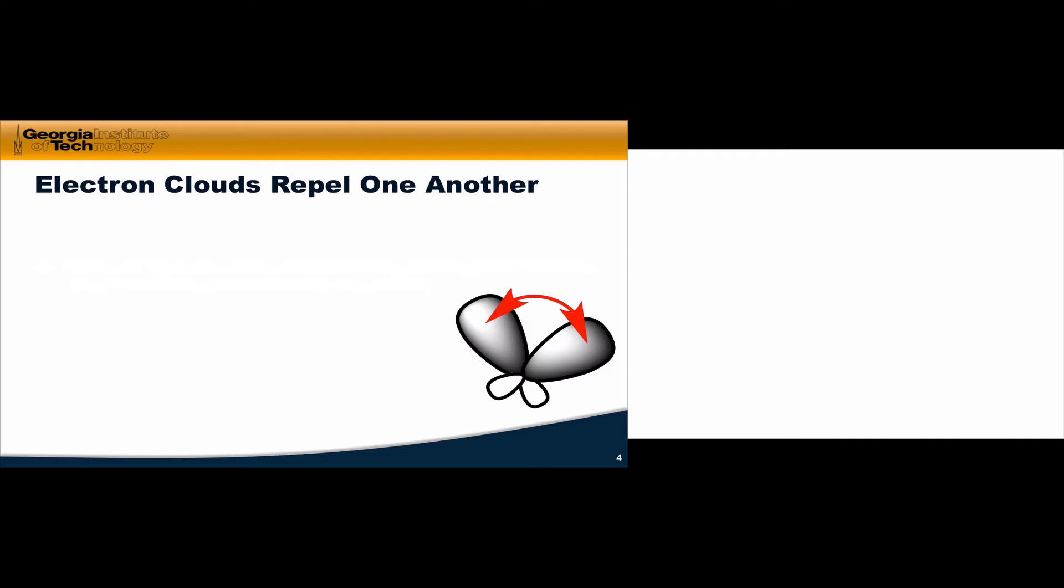The most essential foundational idea of VSEPR theory is that electron clouds repel one another, and this should make a lot of sense in light of Coulomb's law. Coulomb's law says that the energy between two charged particles is proportional to the product of their charges divided by the distance between them, and so when the two charges are the same, the energy is greater than zero, and we should expect repulsion.